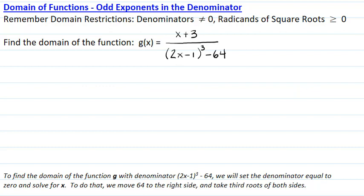To find the domain of the function g that has denominator (2x - 1)^3 - 64, we will similarly set the denominator equal to zero and solve for x.